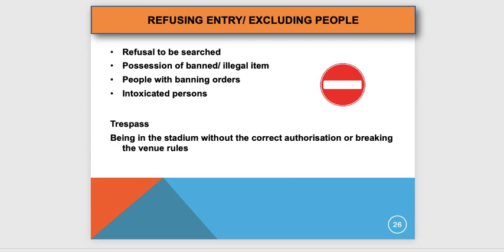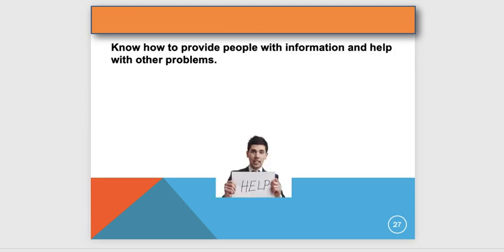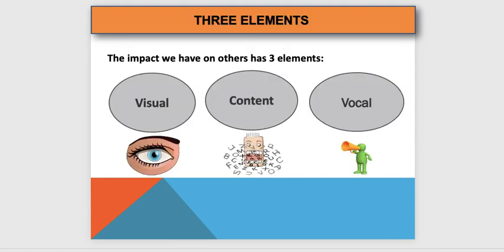The next section covers knowing how to provide people with information and help with other problems. You won't always deal with banned items or banning orders — most of the time people just want to know where things are. Providing information comes down to three elements: visual, content, and vocal.